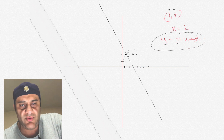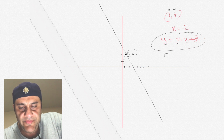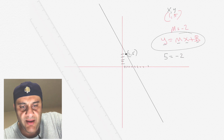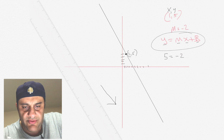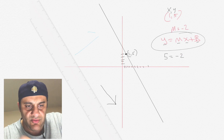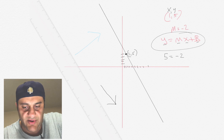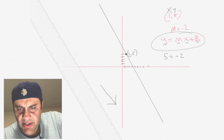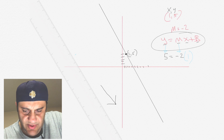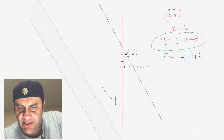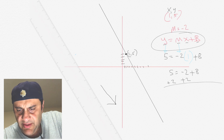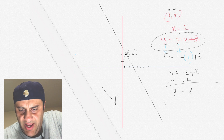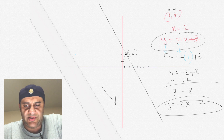So we plug in those three values. y is 5, the slope m is negative 2, and x in this coordinate is 1. So: 5 equals negative 2 times 1 plus b, which is 5 equals negative 2 plus b. Add 2 to each side: 7 equals b. So now we have y equals negative 2x plus 7. That is the linear equation.